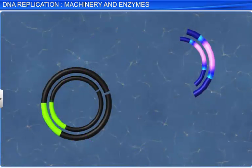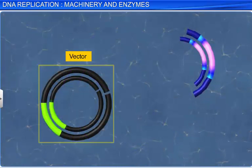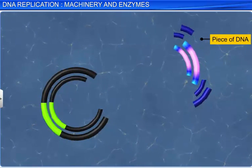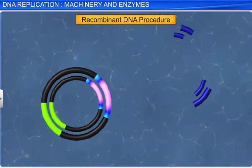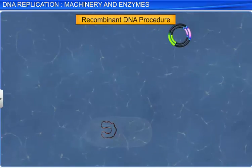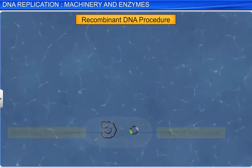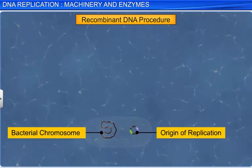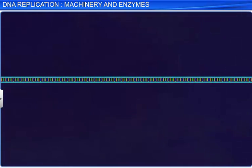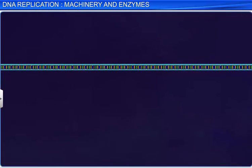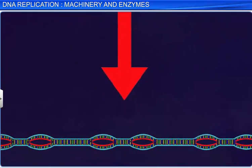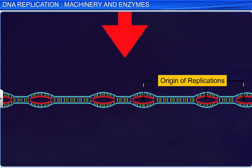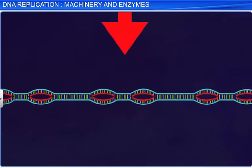This is also the reason why a vector is required when a piece of DNA needs to be replicated during recombinant DNA procedures, as it is the vector that provides the origin of replication. In some cases like eukaryotes with large DNA molecules, there may be many origins of replication that finally merge with one another.